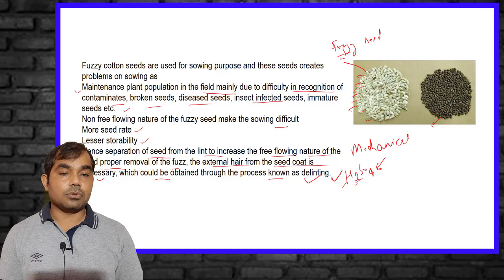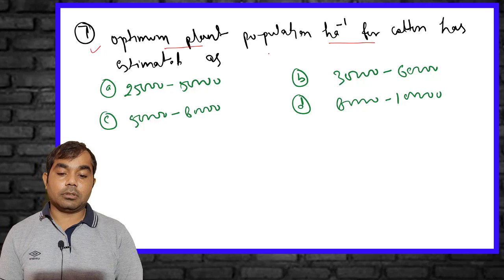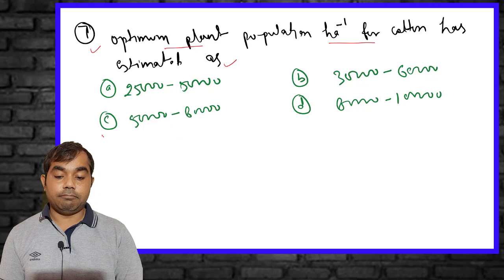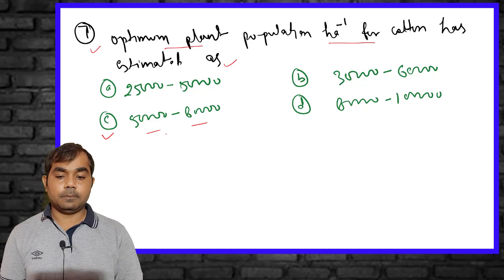The seventh MCQ: the optimum plant population per hectare for cotton is estimated at 50,000 to 80,000 plants per hectare.